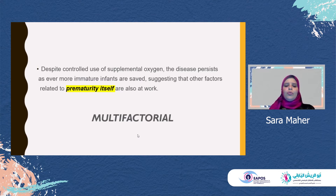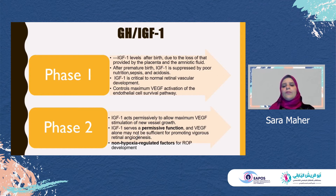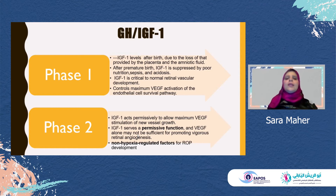As regarding other important cytokines — the growth hormone and insulin-like growth factor 1 (IGF-1). In phase one of the disease, the IGF-1 levels decrease after birth due to loss of supply provided by the placenta and the amniotic fluid. Also, the level is suppressed by poor nutrition, sepsis, and acidosis, and all these are risk factors for the development of ROP. IGF-1 is critical for normal retinal vascular development as it controls the maximum activation of the endothelial cell survival pathway.